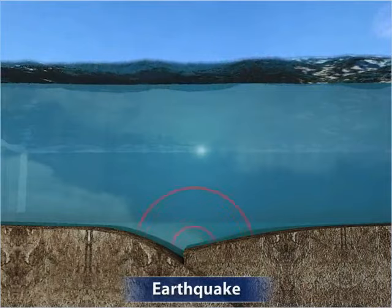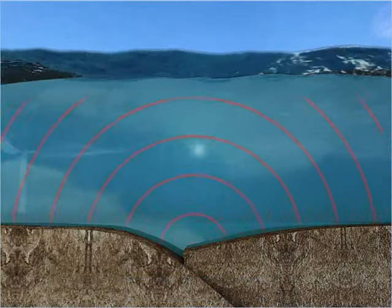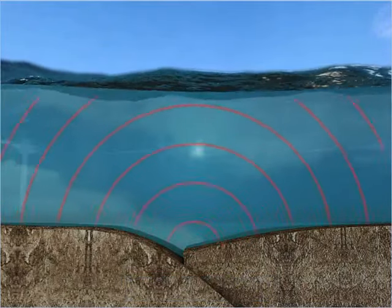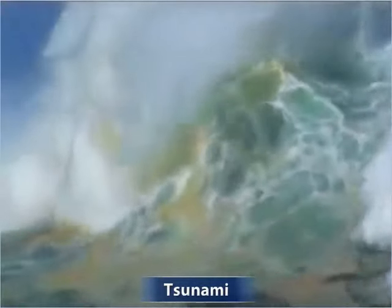When earthquakes occur in the seas and oceans, they displace large amounts of water and generate very high waves called tsunamis. These waves are up to 30 meters high and travel at very high speeds. Your chances of survival are close to nil if you were to stand facing one of these monster waves.